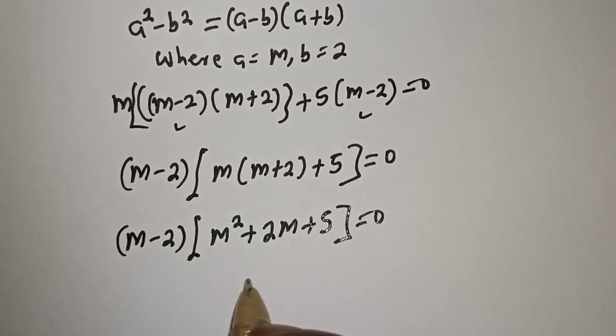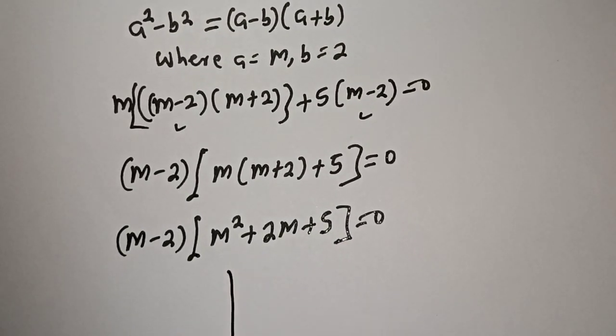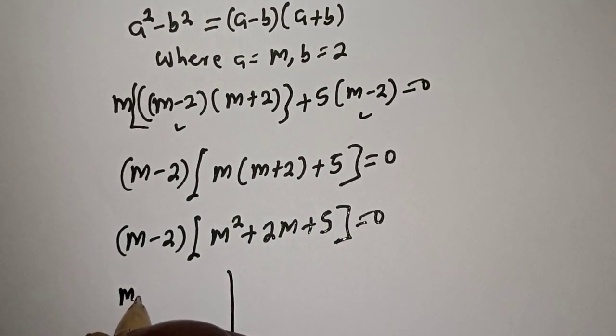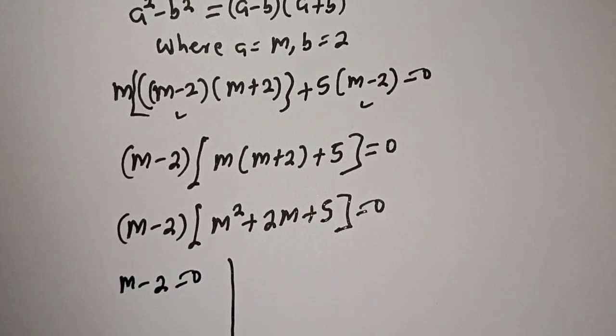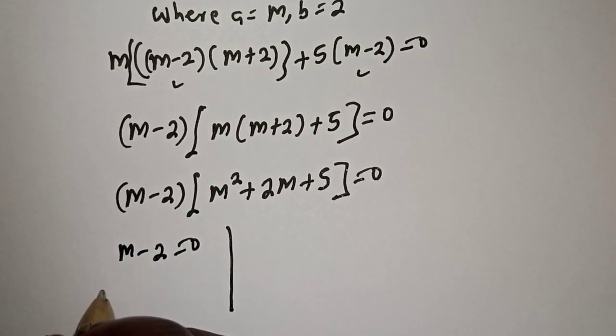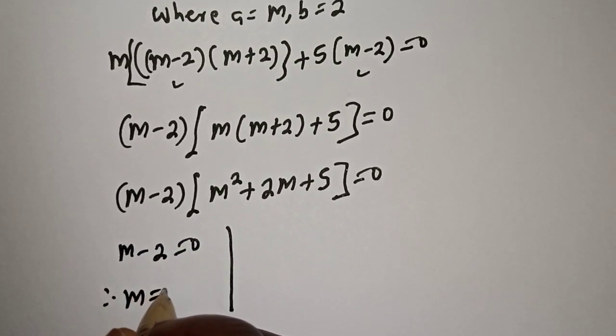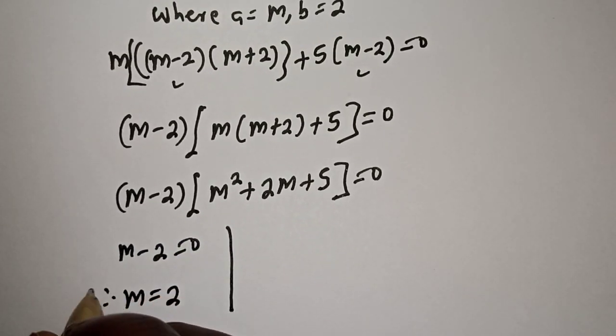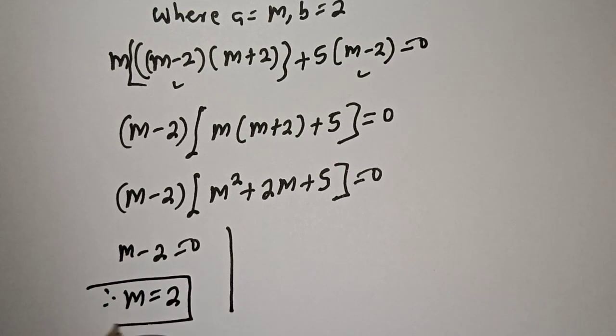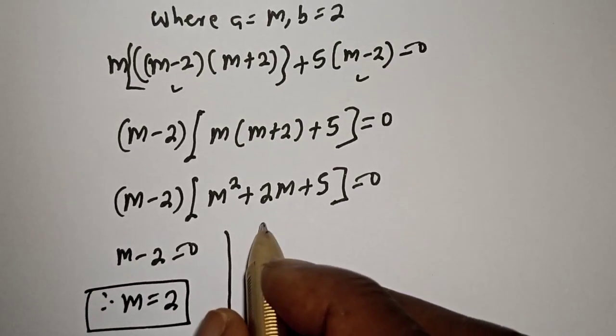There are two cases here. The first case is m minus 2 is equal to 0. Therefore m is equal to 2.